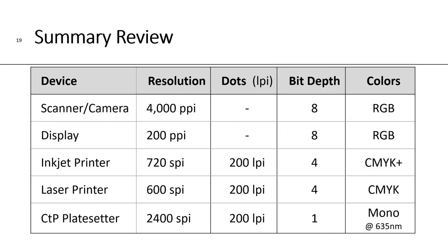To summarize, I have a table showing each device, its resolution, typical output in LPI, bit depth, and colors. For the scanner and camera, it's typically around 4,000 pixels per inch, 8 bits for each color — so 8 for red, 8 for green, 8 for blue — making it a 24-bit device. For displays, they're typically around 200 pixels per inch and also 24-bit. For inkjet printers, a typical resolution might be 720 spots per inch at 200 lines per inch for a 4-bit device. The Epson Stylus Pro 7800 has two cyans, two magentas, one yellow, and three blacks, so CMYK+.